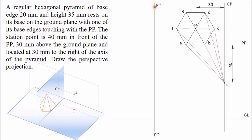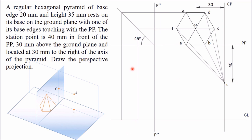I have drawn the side view of the picture plane and marked it as PP double dash. When you look from the side you get one vertical line, which is the side view of the picture plane. From this side you will see three points: A, F, and E will be visible. Draw a line at 45 degrees and project all points into the side view. From all points A, B, C, D, E, F, draw horizontal lines and then vertical lines to project. Since the base is on the ground line, all base points will appear there.